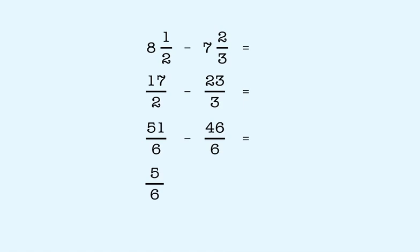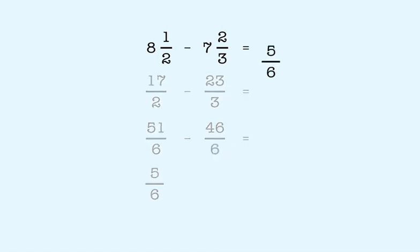5 sixths is already in simplest terms. So 8 and 1 half minus 7 and 2 thirds is equal to 5 sixths. In the remainder of this lesson, you'll get practice solving addition and subtraction problems with mixed numbers by first converting the mixed numbers to improper fractions.